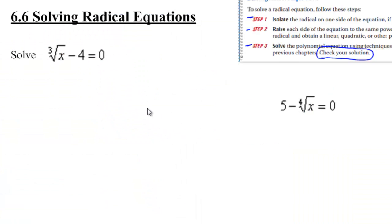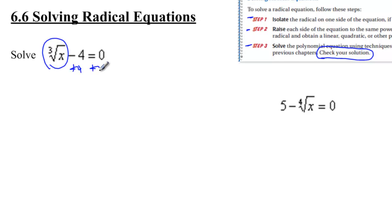The first problem says the cube root of x minus 4 equals 0. Our first step is to get the radical by itself — the cube root of x. So I'm going to do that by adding 4 to both sides, and I'm going to get the cube root of x equals 4.